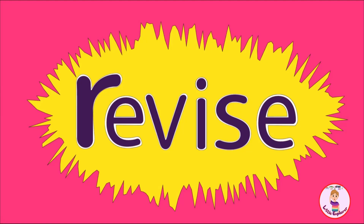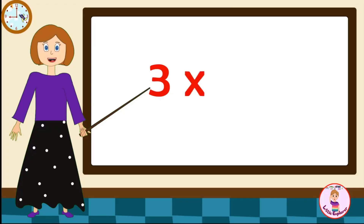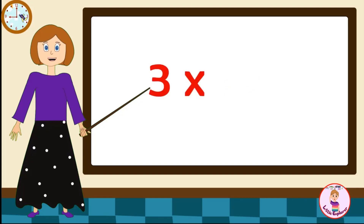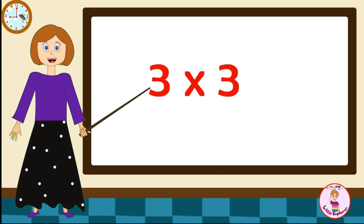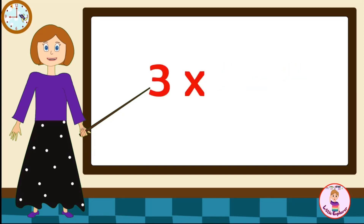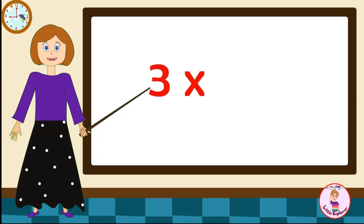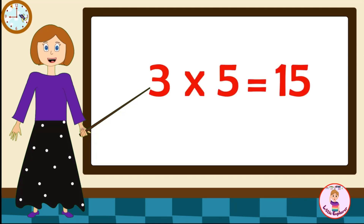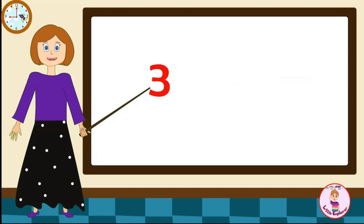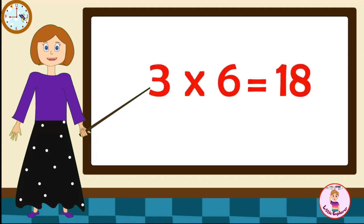Let's revise it one more time. Come on! Three-one's are three. Three-five's are fifteen. Three-six's are eighteen.